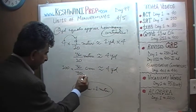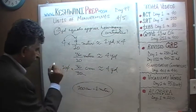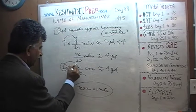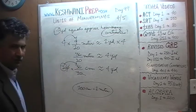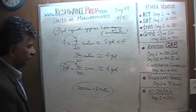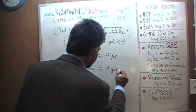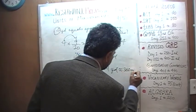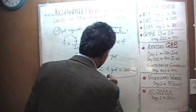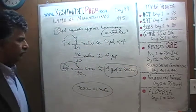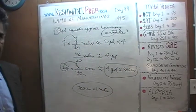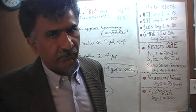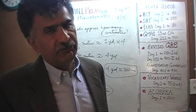Divide top and bottom by 10 — this 10 goes away and the 0 drops out. It's essentially 10 times 36, which is 360. So 4 yards approximately equals 360 centimeters. The answer is about 360 centimeters.